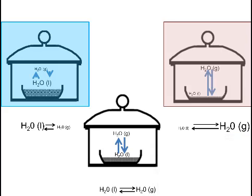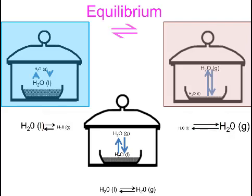In all three cases, the rates of forward and reverse reaction are equal to one another, and so they are all in equilibrium. Unless equilibrium is disturbed, the amount of liquid water in each of the situations will not change over time, and the amount of water vapor in that particular setup won't either change over time. But the three differ.